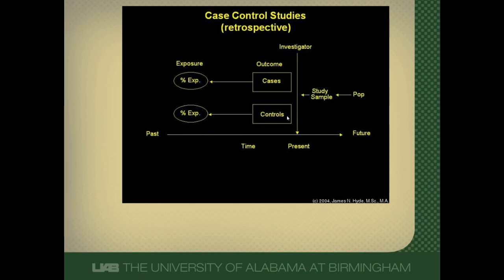A control must at least be able to develop the disease of interest — this is very important. For example, we wouldn't want to study the effect of hormone replacement therapy and uterine cancer where our cases are women with uterine cancer and our controls are men. These men clearly wouldn't have uterine cancer and never could develop it, so this would be a very biased study — specifically selection bias. Make sure when you read these studies that the controls could have been a case and had the possibility of developing disease.